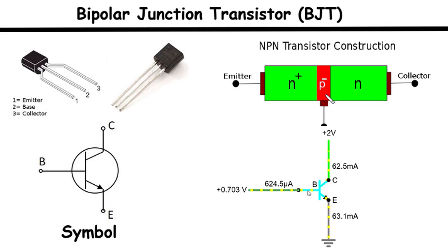The symbol for an NPN transistor is composed of two arrows pointing inward towards the base, which represents the P-type region, and a circle at the emitter side, indicating the N-type region. The arrow pointing outward from the base indicates the direction of conventional current flow. This symbol is universally recognized in electronic circuit diagrams and serves as a visual representation of the NPN transistor's function and connectivity within a circuit.